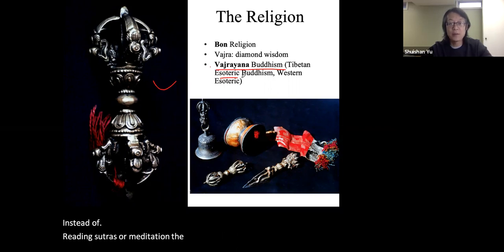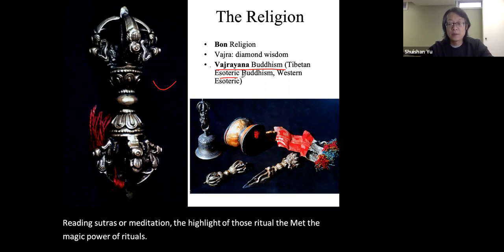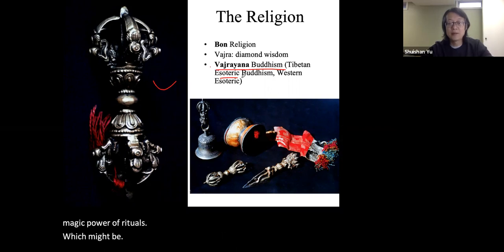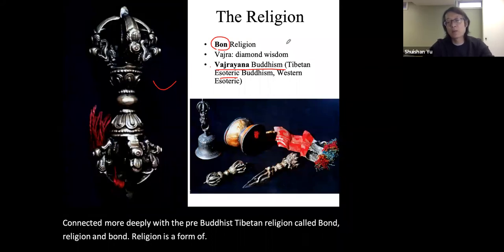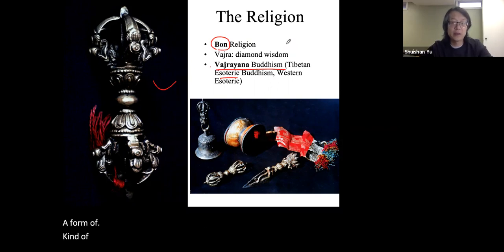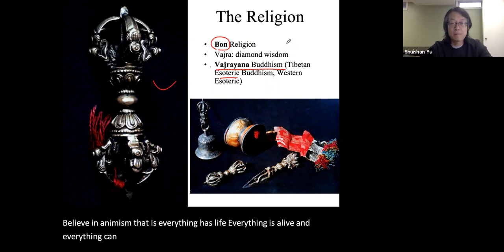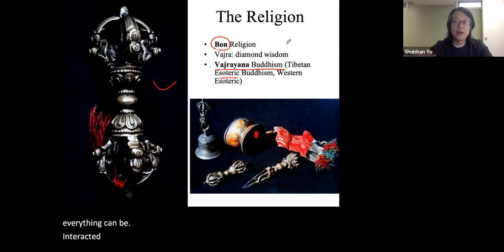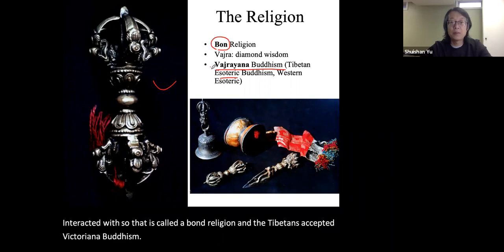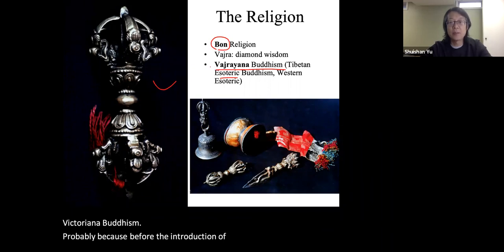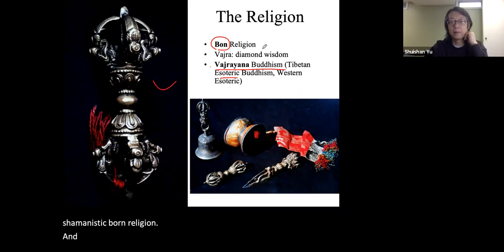Vajrayana highlights the magic power of rituals, which may be connected more deeply with the pre-Buddhist Tibetan religion called the Bon religion. Bon is a form of shamanistic practice — belief in animism, that everything has life and can be interacted with. The Tibetans accepted Vajrayana Buddhism probably because there was already a shamanistic Bon religion, and they felt a greater familiarity with Vajrayana.